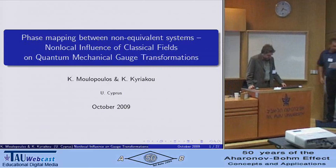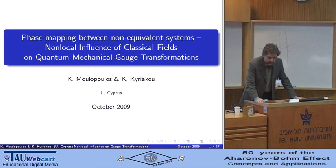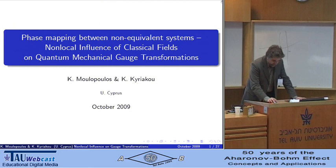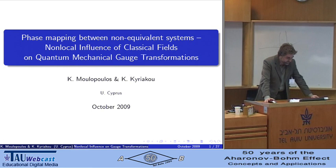I'm going to tell you about some results, some phases that are different from the usual. How do I operate this? Phase mapping between non-equivalence systems, non-local influence of classical fields on quantum-mechanical gauge transformations is the title of the poster.